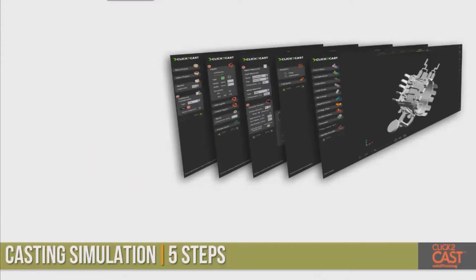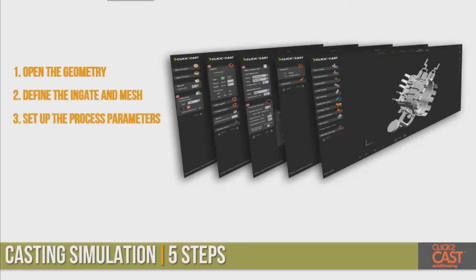Click to Cast is casting simulation in five easy steps: we open the geometry, we define the endgate and mesh, we set up the process parameters, we run the calculations, and then we analyze the results.